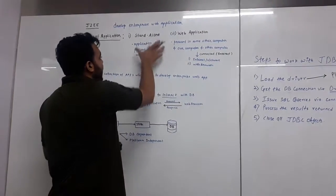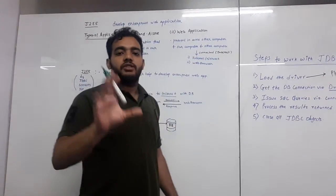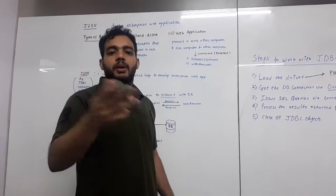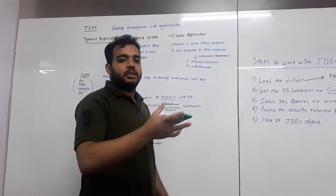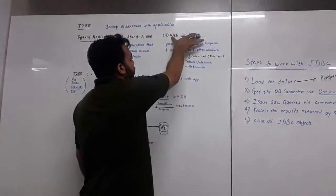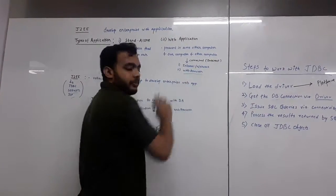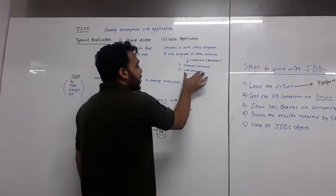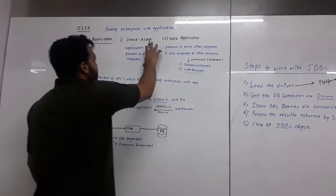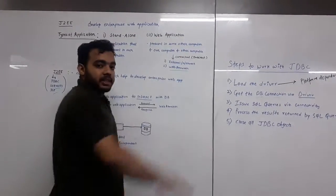For web applications, we need a connection. That may be an intranet or internet. Intranet means a private network and internet is public. For web application to work, we make use of a web browser. A web browser without internet comes under standalone, whereas a web browser with connection comes under web application.